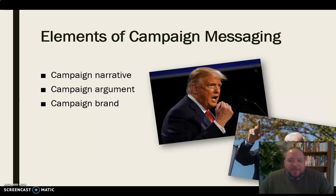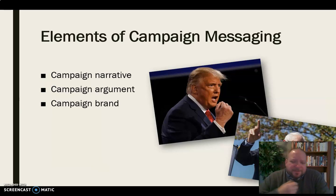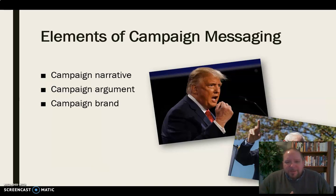The third element is a campaign brand — who are they? Are they the outsider? For example, Donald Trump in 2016 framed himself as the outsider; he was going to drain the swamp and he's not a politician. That was really his brand. Bernie Sanders' brand is very progressive — do things differently, not just small changes but really shake things up. As part of a campaign communication strategy, candidates develop a sort of brand and a way to present themselves to the voting public.